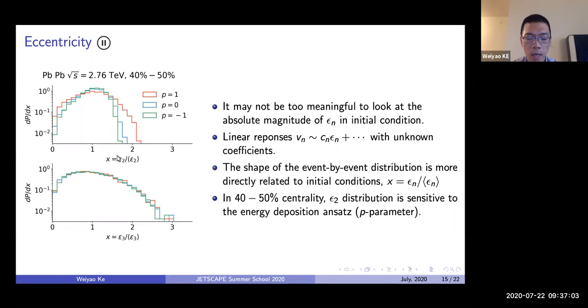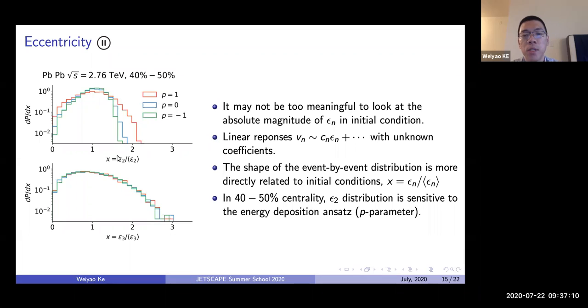Currently, we find that at RHIC and LHC energies, the best fit, or the preferred P value, is very close to zero.